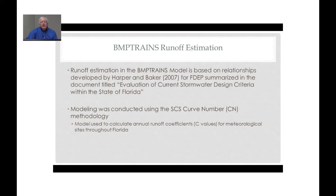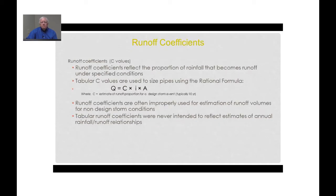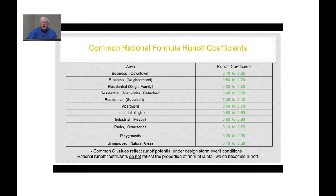Many of you may already be familiar with runoff coefficients. The concept of a runoff coefficient is commonly used in the rational formula to calculate pipe sizes, and in that case the C value used in the rational formula represents the runoff proportion for large storm events. Tabular values are available for C values for use with the rational equation, where different land uses are summarized and runoff coefficients are provided for each.